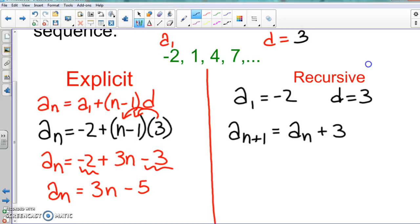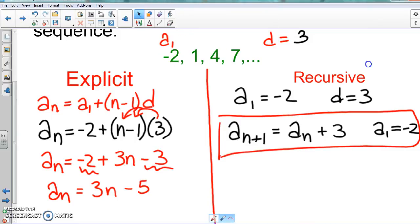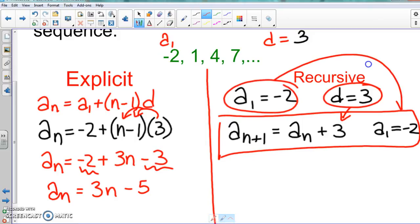But when it comes to writing our formula, this one's actually so much simpler, you just have to remember how to write it though. All we have to do, we're going to start with aₙ₊₁ here, that's going to equal aₙ + 3. And with that again we say a₁ = -2. So that's all we do for recursive.